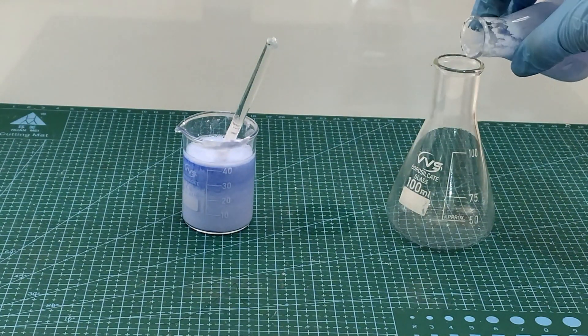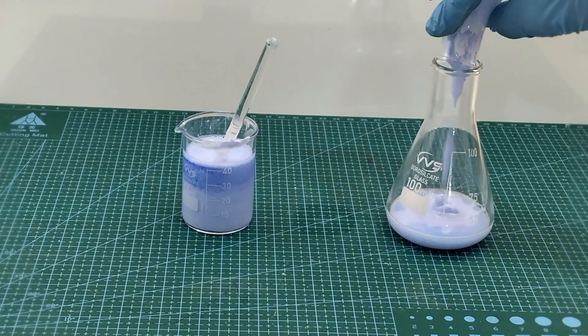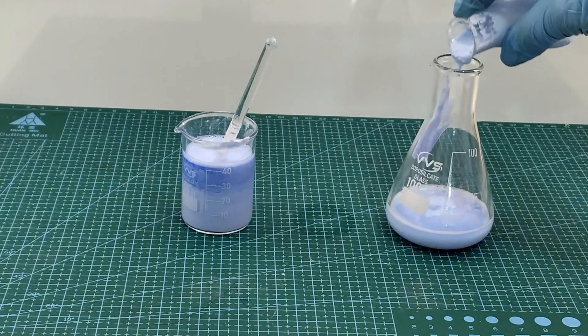I now move the mixture to a bigger conical flask. As this mixture is being poured, you can see some of the oobleck properties.